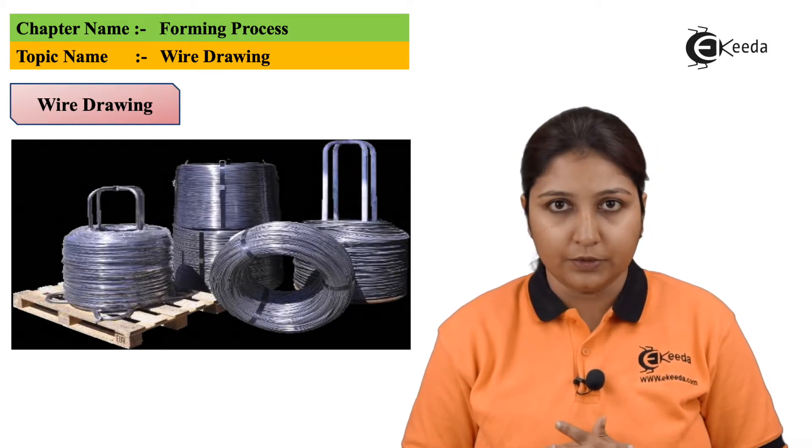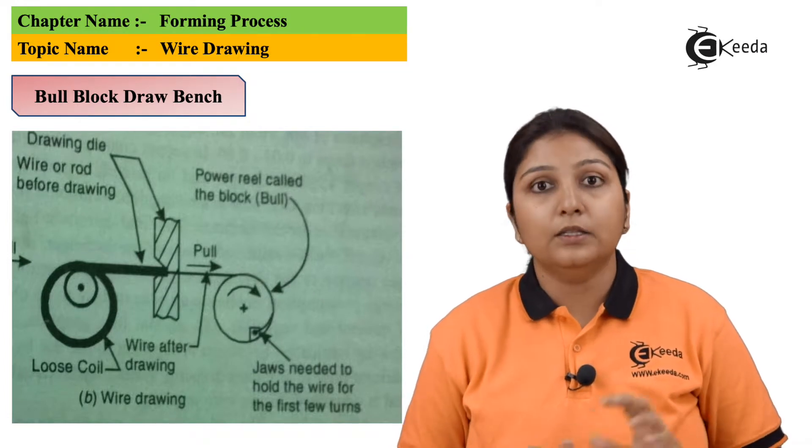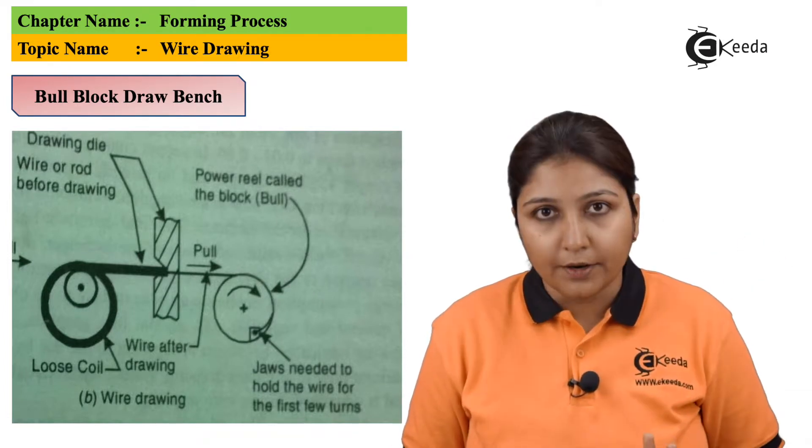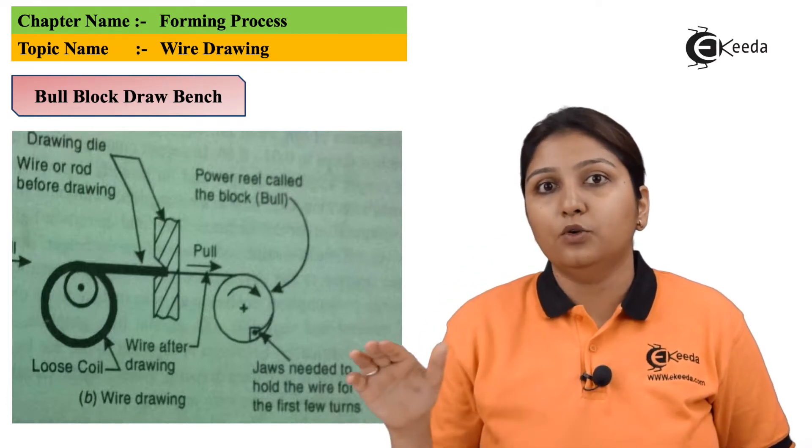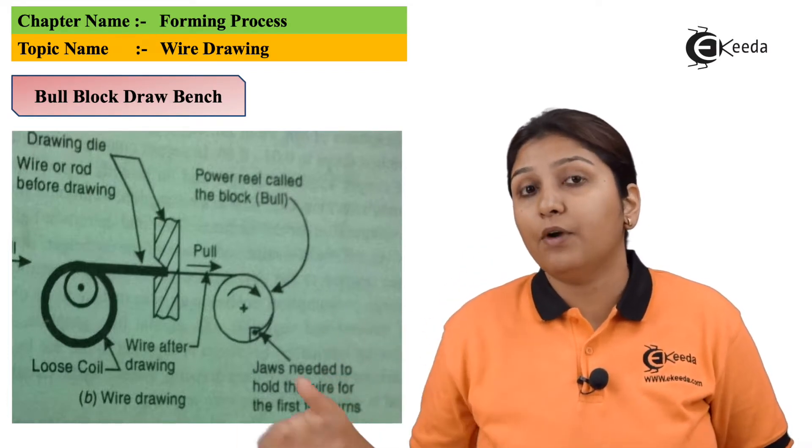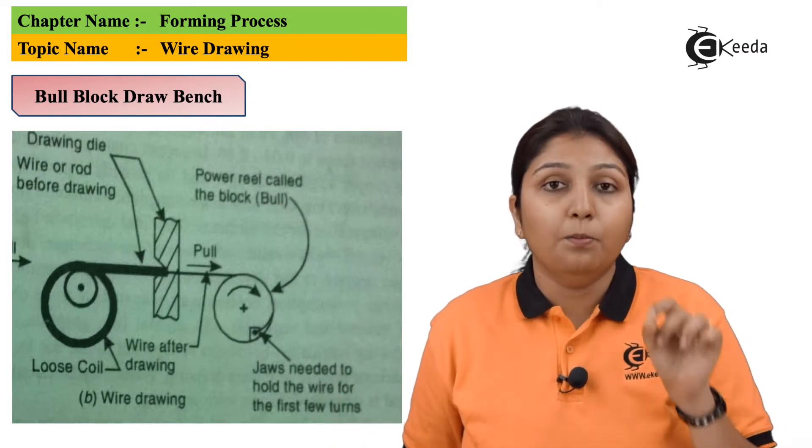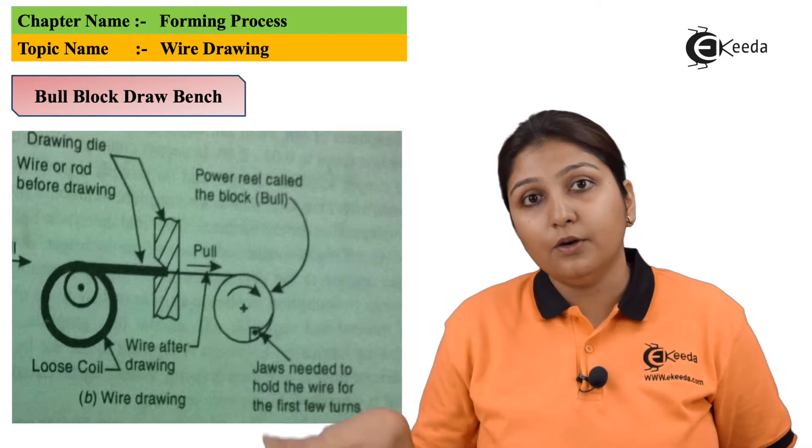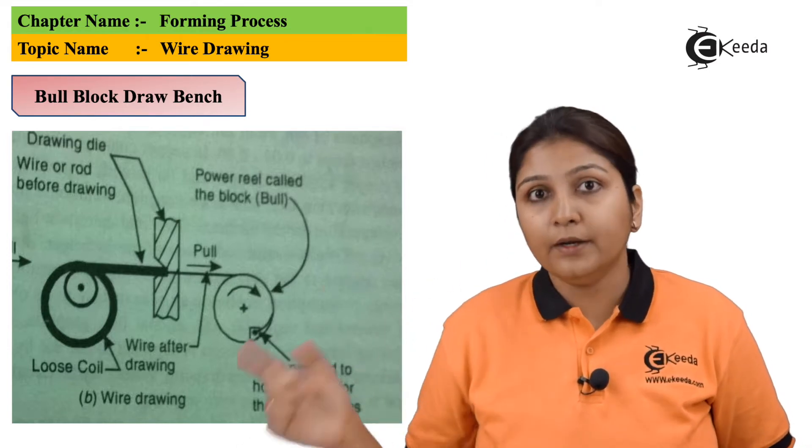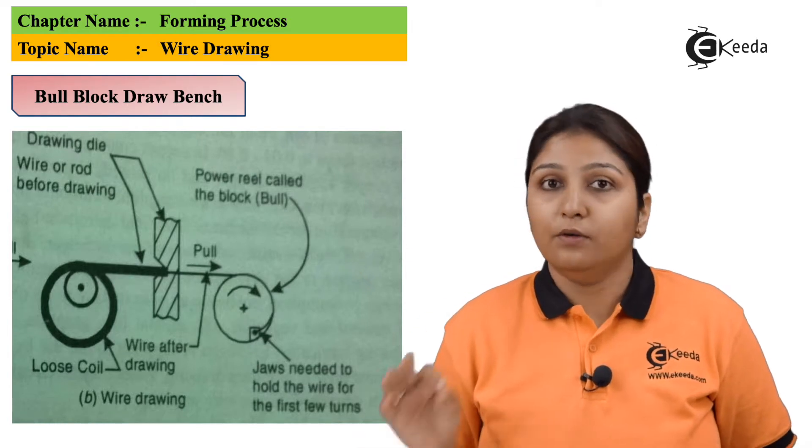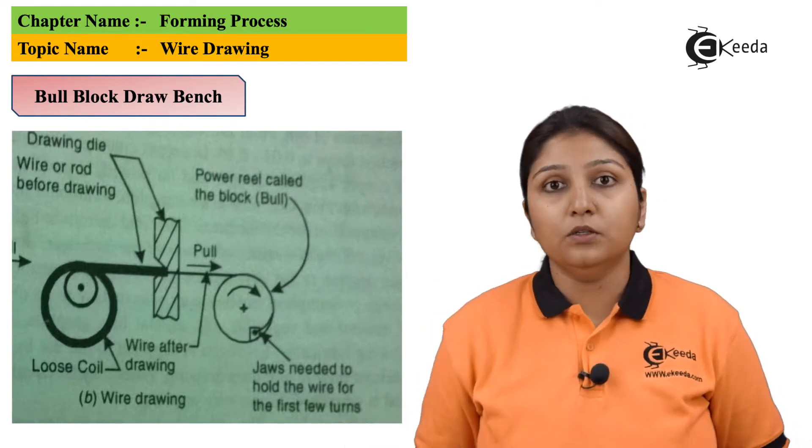Again there is a chain block. In this diagram you can see there is a loose wire wounded and there is a small opening which has your wire to be passed and it is getting unwinded at the other angle. So the loose wire is your billet and it is again drawn through a small opening and getting unwinded at the other end, which is your final wire of reduced diameter. So this is known as bull block draw bench diagram.